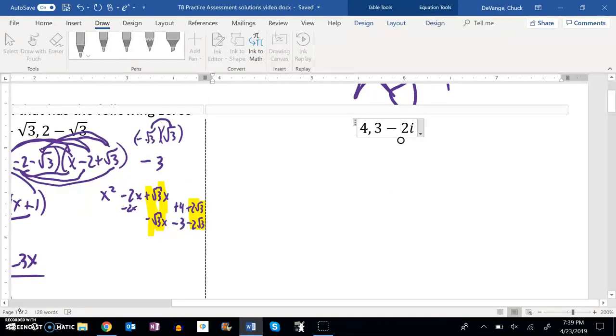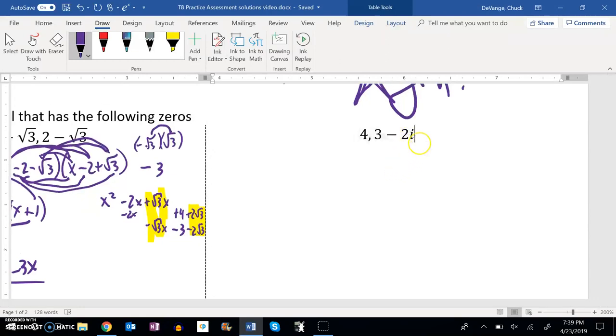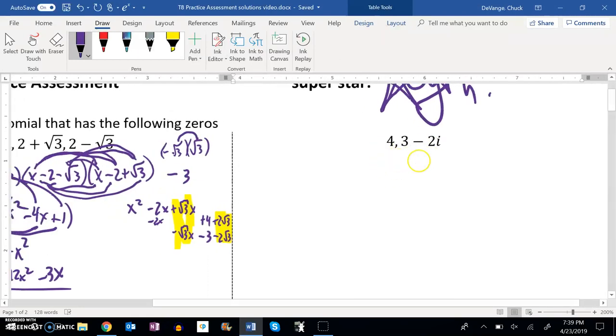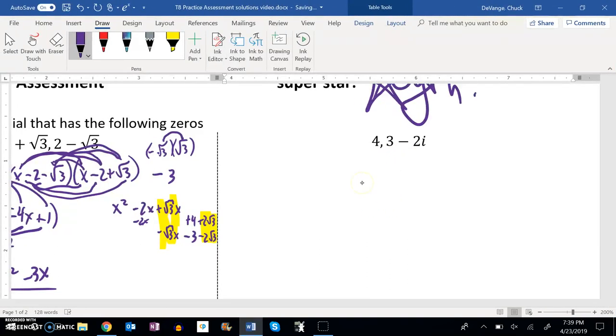And if you'll notice, I already have two of them, two zeros listed, the 4 and the 3 minus 2i. Remember, these will come in conjugate pairs. So if 3 minus 2i is one of the zeros, then 3 plus 2i must be one of the zeros as well. So 3 plus 2i is implied. It comes in with a 3 minus 2i.